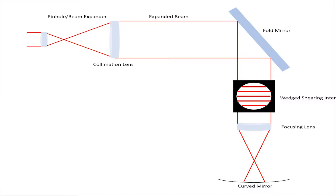The same setup from the previous experiment was used to look at the effects of decentering and defocus a curved mirror has on a reflective wavefront. A wedge-sharing interferometer in its reverse direction was used for this. We had to use a fold mirror to increase the length of the optical rail, because the focal length of the curved mirror required extra room. A focusing lens was used to focus the beam so that it would be directly reflected when the mirror is properly aligned to produce a reflected collimated beam.